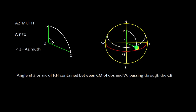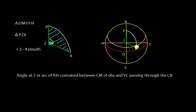At any given time, suppose the sun is here at X. We are having this triangle and we call it the PZX triangle. In this PZX triangle, angle Z is called azimuth.